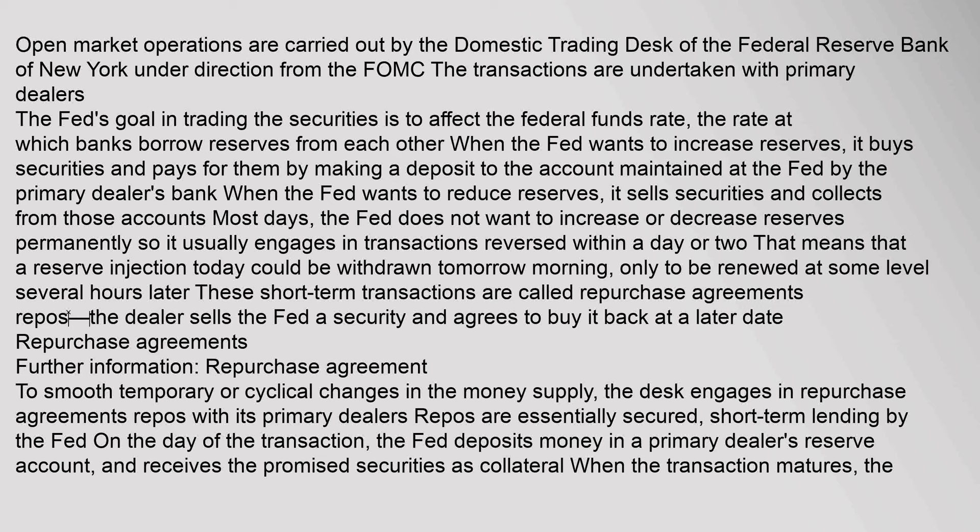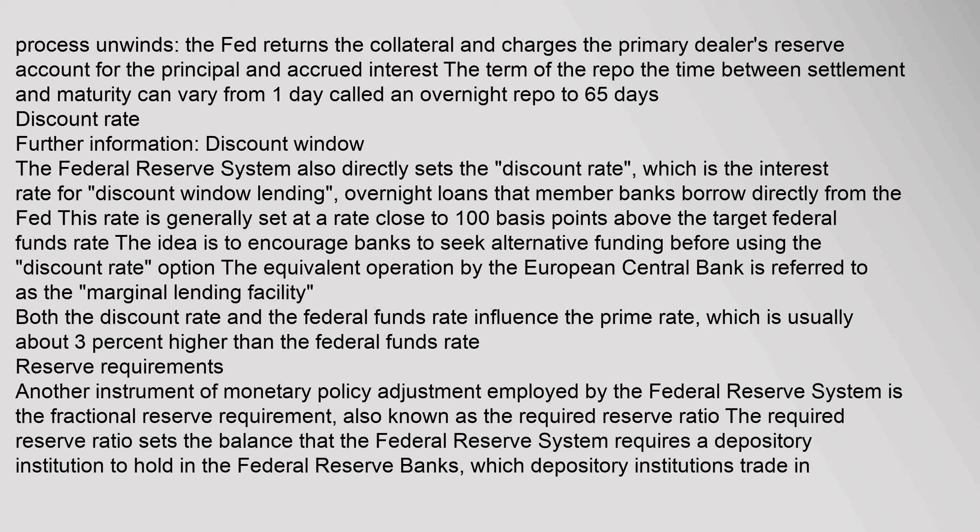Repurchase agreements (Repos) are essentially secured, short-term lending by the Fed. On the day of the transaction, the Fed deposits money in a primary dealer's reserve account and receives the promised securities as collateral. When the transaction matures, the Fed returns the collateral and charges the primary dealer's reserve account for the principal and accrued interest. The term of the repo can vary from one day (an overnight repo) to 65 days. The Federal Reserve System also directly sets the discount rate — the interest rate for discount window lending — which is generally set at a rate close to 100 basis points above the target federal funds rate. Both the discount rate and the federal funds rate influence the prime rate, which is usually about 3% higher than the federal funds rate.